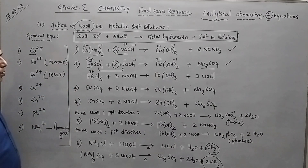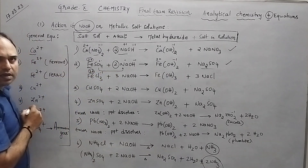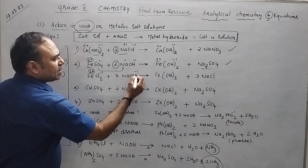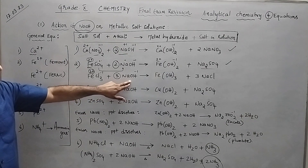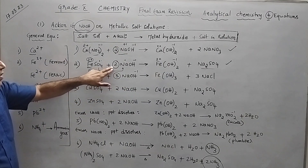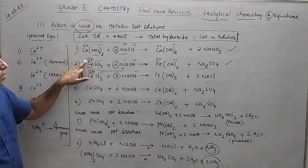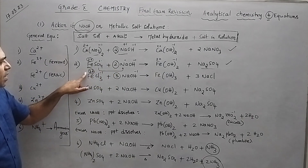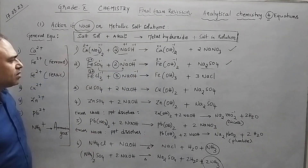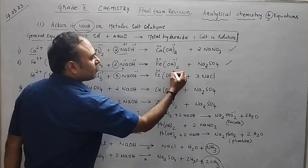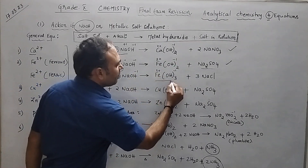Now if you have Fe³⁺ (ferric): you have three positive charges, so you need three negative charges — hence take 3 moles of NaOH. You can see the difference: for Fe²⁺ you took 2 moles; for Fe³⁺ you take 3. Because it is 3+, your hydroxide will have three OH⁻ groups, giving Fe(OH)₃.